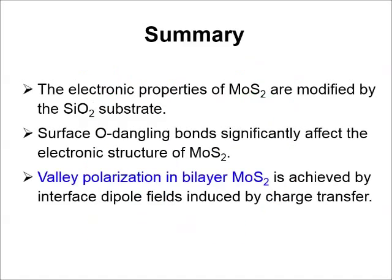To summarize, we have shown that the valley polarization could appear when bilayer MoS2 is deposited on the silicon oxide substrate, which in fact agrees with the experiments.